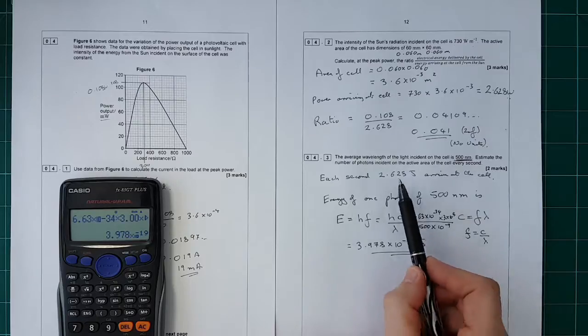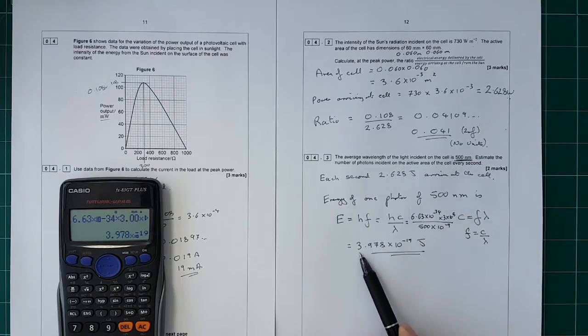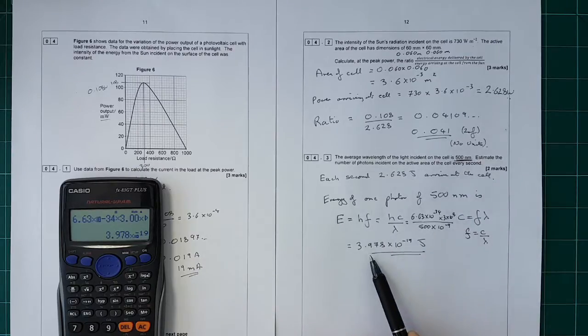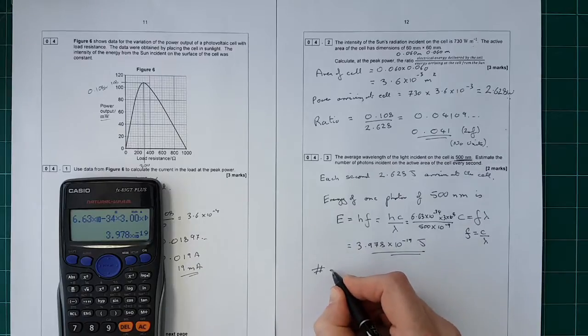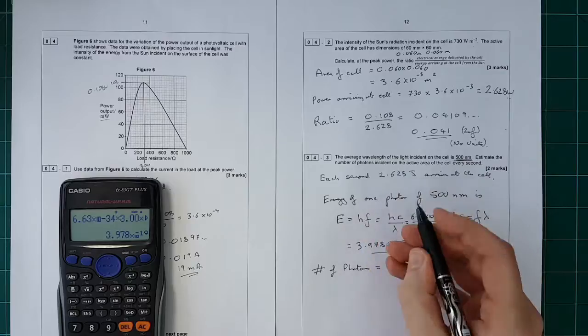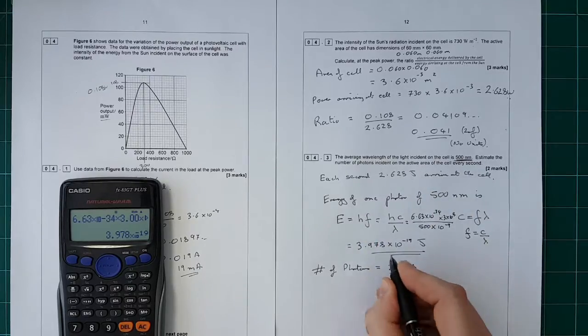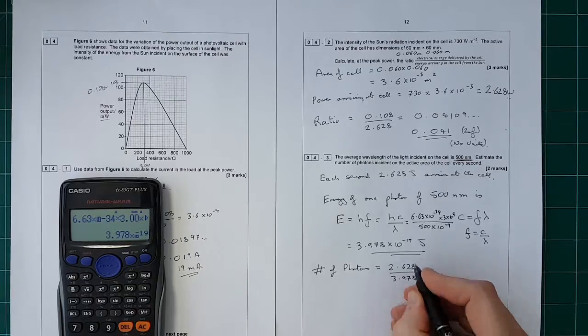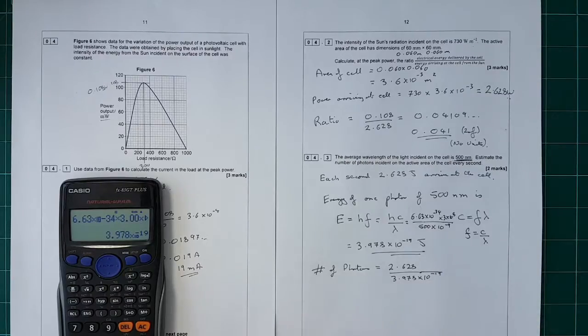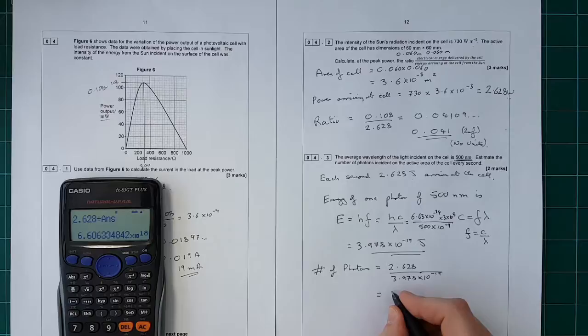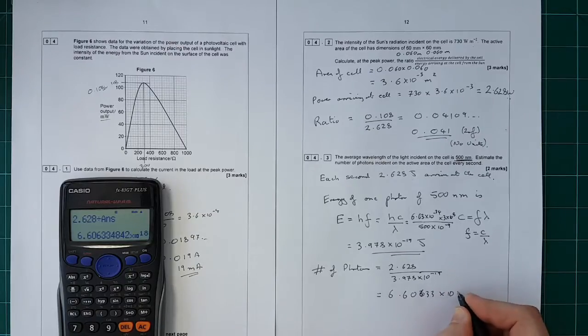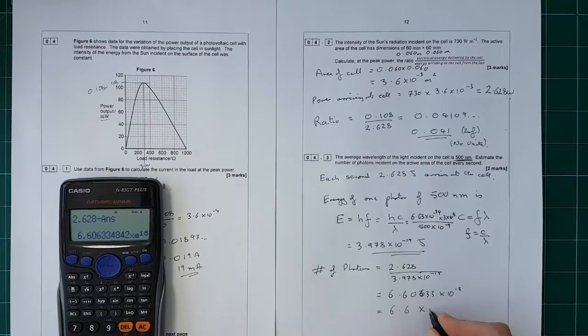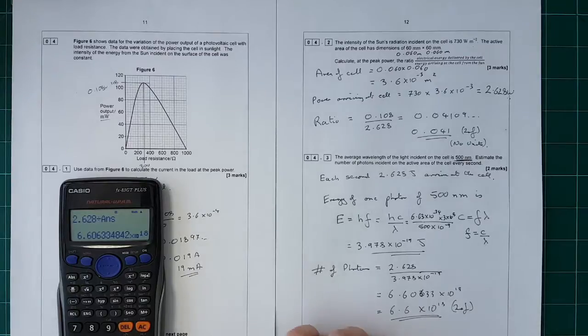We have this much energy arriving each second, each 500 nanometer photon has this much energy. The number of photons equals the total energy, 2.628, divided by the energy of each photon, 3.978 × 10⁻¹⁹. That gives us 6.6 × 10¹⁸ to 2 significant figures. That's question 4.